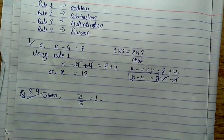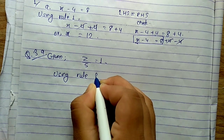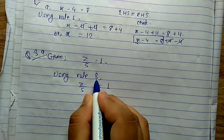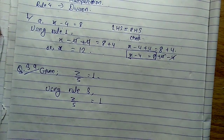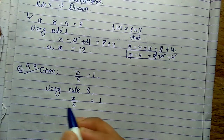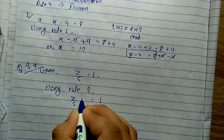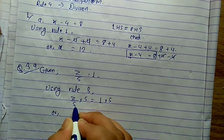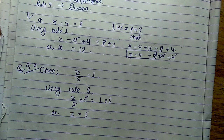Given: z by 5 equals 1. We need to find the value of z using Rule 3. Rule 3 means multiplication — we multiply by the number that is next to the variable. Here we have z by 5, so we multiply both sides by 5. The 5 in the denominator and the 5 in the numerator cancel out, leaving z equal to 1 times 5, which is 5. So the value of z is 5.